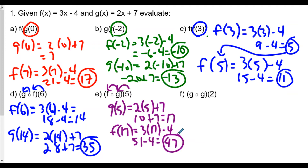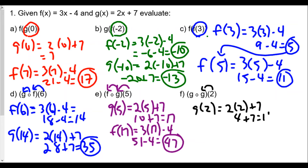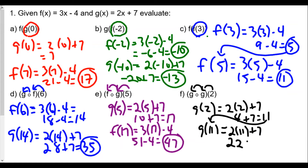For part f, g of g of 2: we plug 2 into g. So g of 2 is 2 times 2 plus 7, or 4 plus 7, which is 11. Then we plug 11 into g — the result goes into our outside g function. So g of 11 is 2 times 11 plus 7, or 22 plus 7, which equals 29.